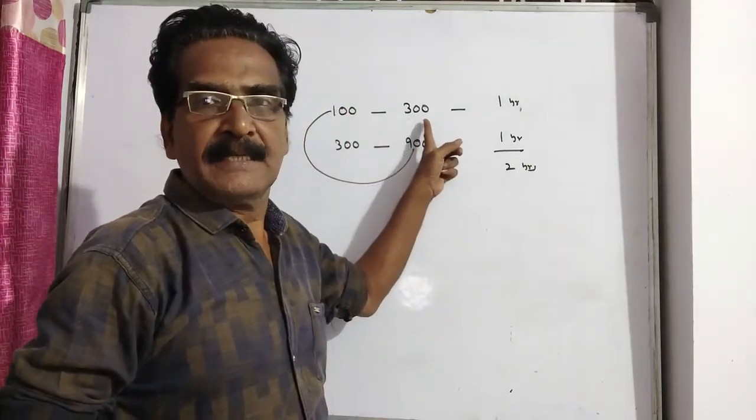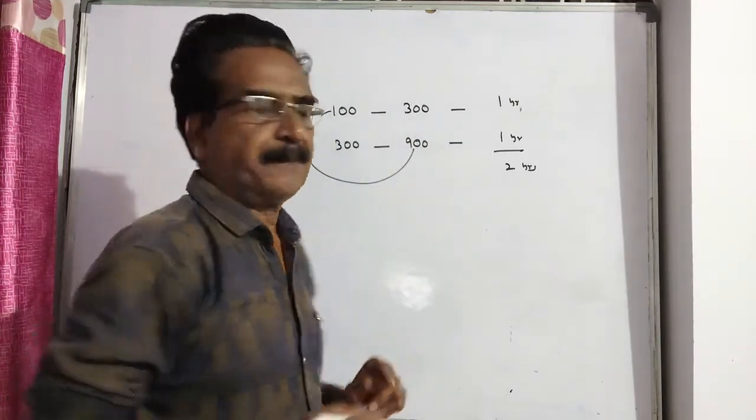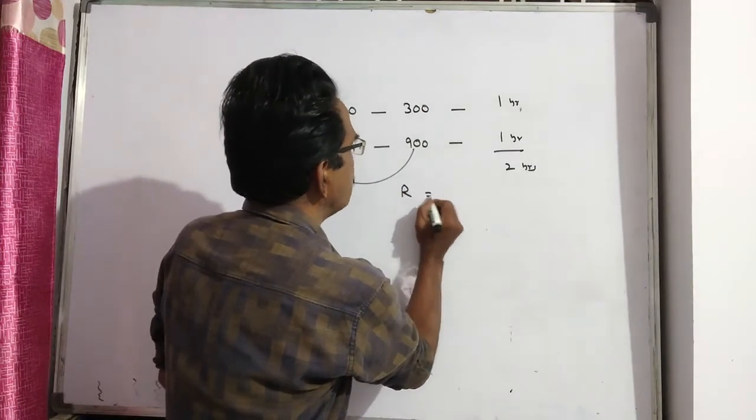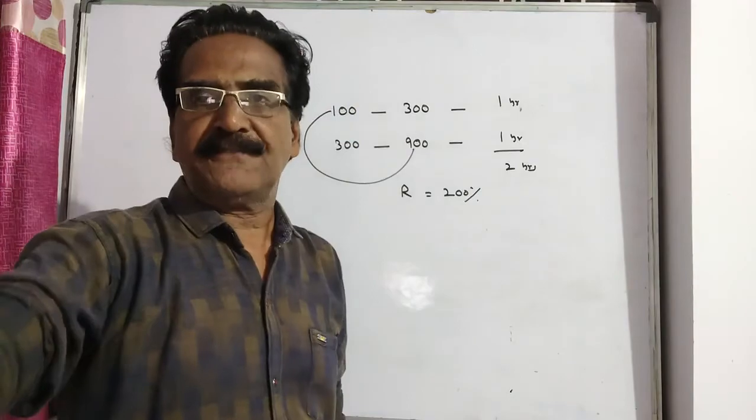100 becomes 300 means the increase is 200 percent. So the rate of interest r is equal to 200 percent. Okay friends, thank you.